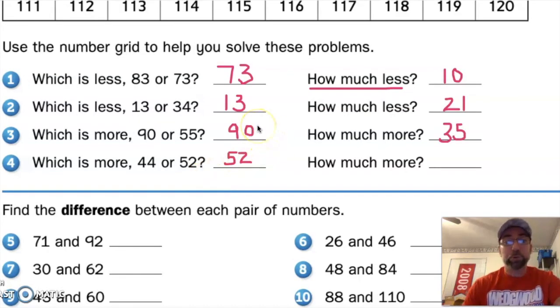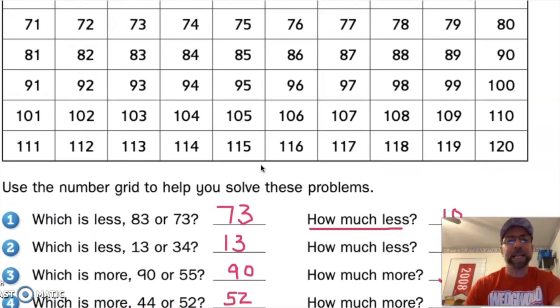So hopefully you were able to complete problems one through four. Here's the answers for you to check your work. Which number is less? And how much less? And then we move to which is more? And how much more? But all those problems are solved the same exact way. Now I didn't put the answer to number four. Which is more? 44 or 52? I want to do that one together.